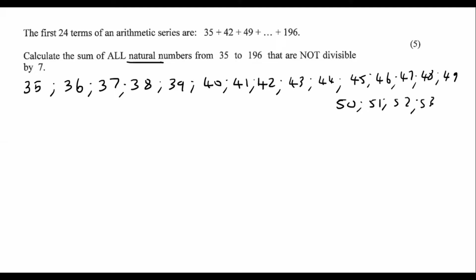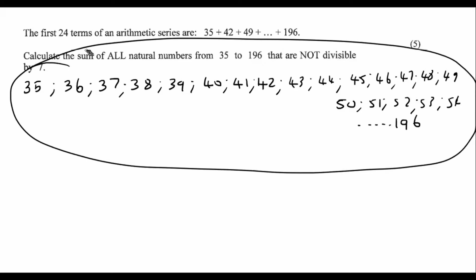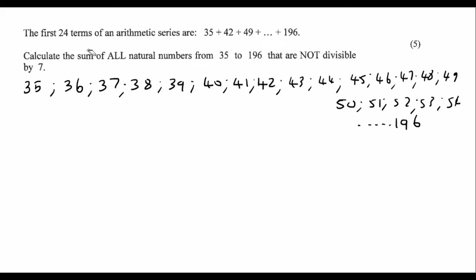They want us to take up all these numbers all the way up to 196, and calculate the sum of all the natural numbers that are not divisible by seven. What I think we should do is first calculate the sum of ALL of these numbers. We know that this is an arithmetic pattern — can you see it? It's adding one each time.